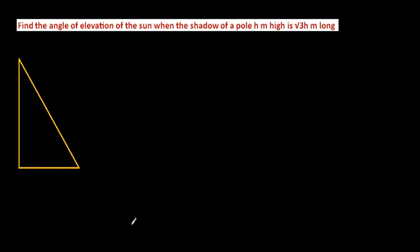Hello guys, today's question is: find the angle of elevation of the sun when the shadow of a pole h meters high is root 3 h meters long.